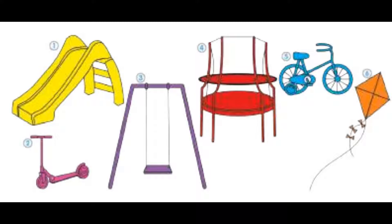Four, it's a trampoline. It's red. Five, it's a bike. It's blue. Six, it's a kite. It's orange.